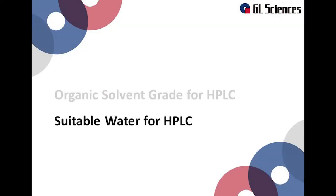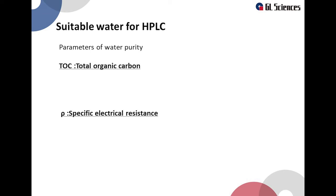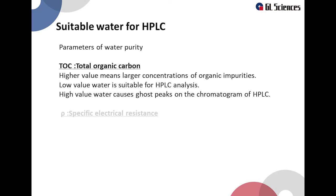Next we will discuss what water can be used for HPLC. The parameters for purity of water are total organic carbon, also known as TOC, and the specific electrical resistance. The total organic carbon is more commonly known as TOC — a higher value corresponds to a larger concentration of organic impurities. Water with a low TOC value is suitable for HPLC analysis.